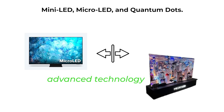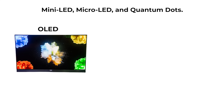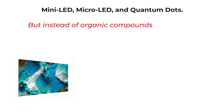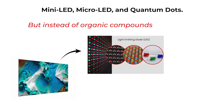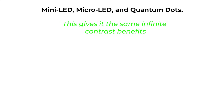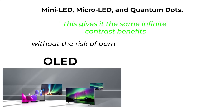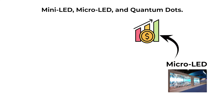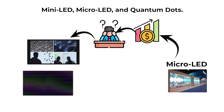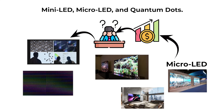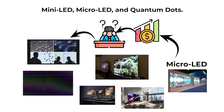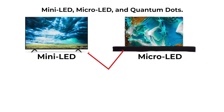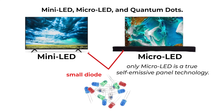Micro-LED is a separate and much more advanced technology. Like OLED, micro-LED is self-emissive, meaning each pixel generates its own light. But instead of organic compounds, micro-LED uses tiny inorganic light emitting diodes for each sub-pixel. This gives it the same infinite contrast benefits as OLED, without the risk of burn-in and with potentially higher brightness and lifespan. Micro-LED is still extremely expensive and difficult to manufacture at monitor pixel densities, so it is mostly seen in large prototype displays or luxury televisions. Importantly, micro-LED should not be confused with dense mini-LED backlights — only micro-LED is a true self-emissive panel technology.